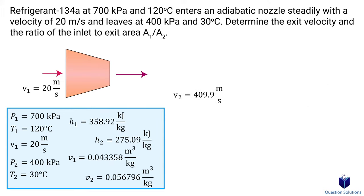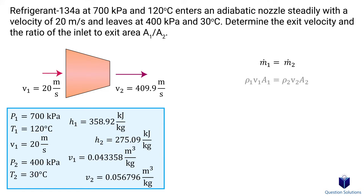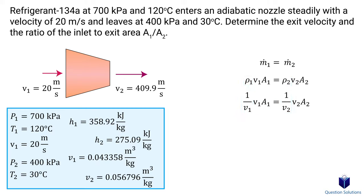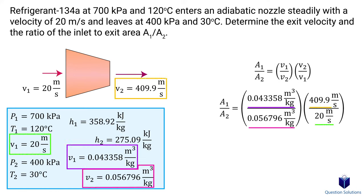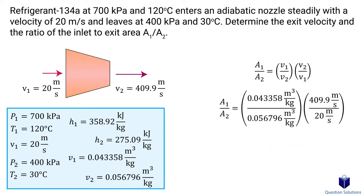The next part asks for the ratio of inlet to exit area of the nozzle. We use the mass balance equation and expand it using the mass flow expression. Since we don't have density, we replace it with 1 over specific volume. Isolating the ratio A1/A2, and being careful not to confuse specific volume with velocity (even though the letters look similar), we plug in the specific volume values we found earlier and the exit velocity from the previous step to get our area ratio.